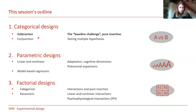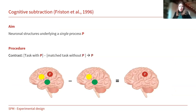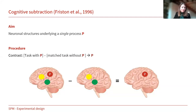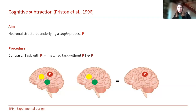The idea of cognitive subtraction is very intuitive and pretty easy. The idea is that we want to find the neural structures underlying a specific process — for instance, perceptual expertise with cars. The procedure is to construct a condition where subjects engage in your process of interest, and another condition where subjects do a similar task but do not engage in that process. When you subtract the brain activation in the experimental condition from the control condition, you're left with activation that can be attributed to your process of interest.